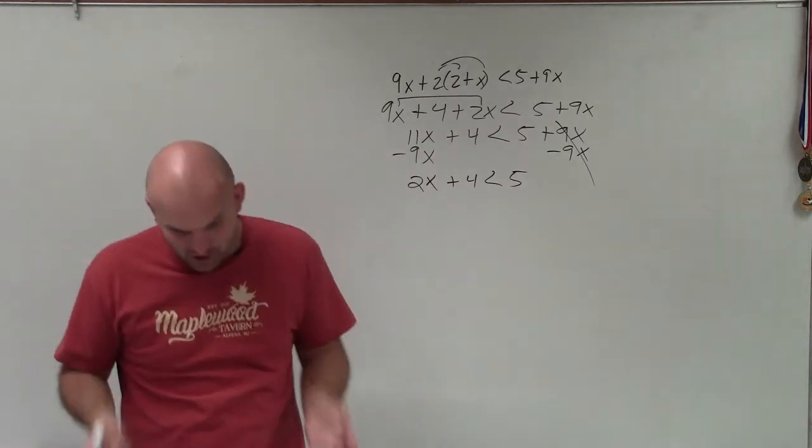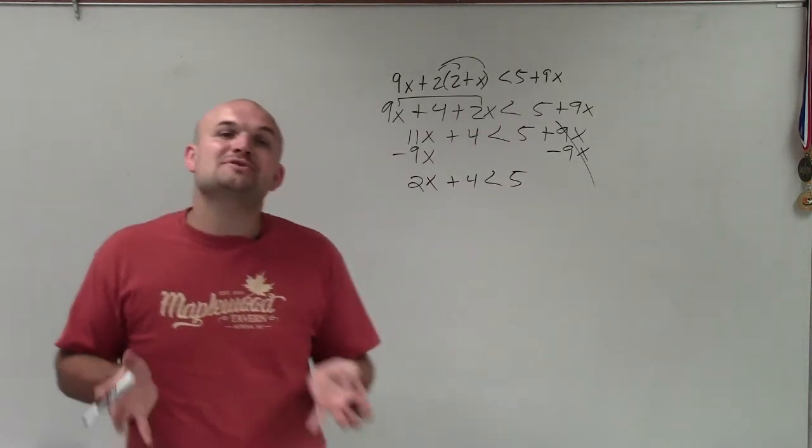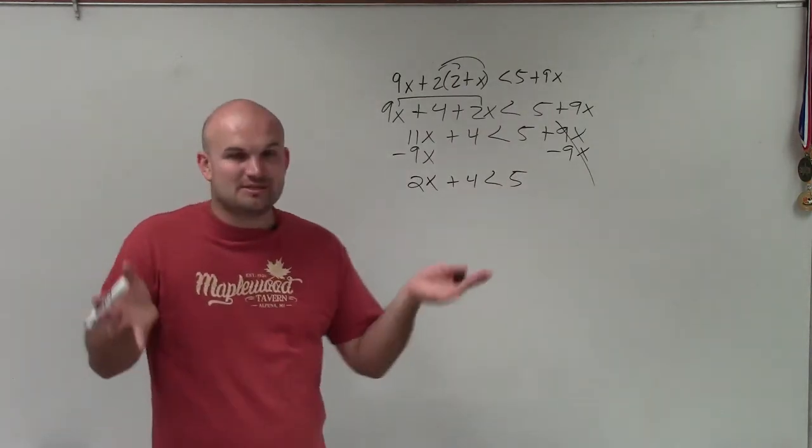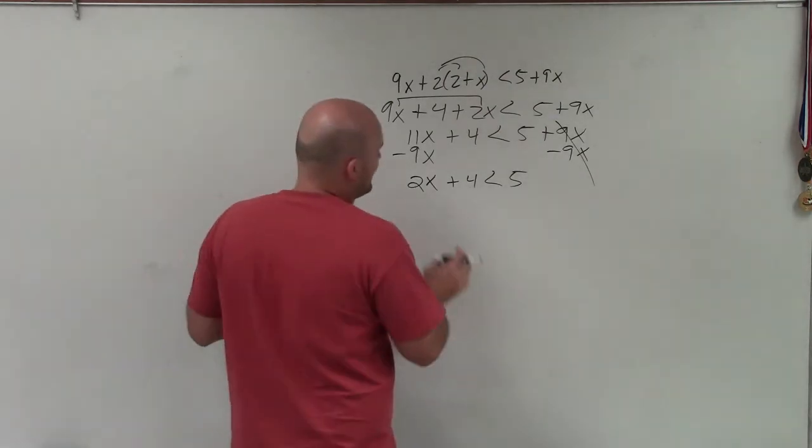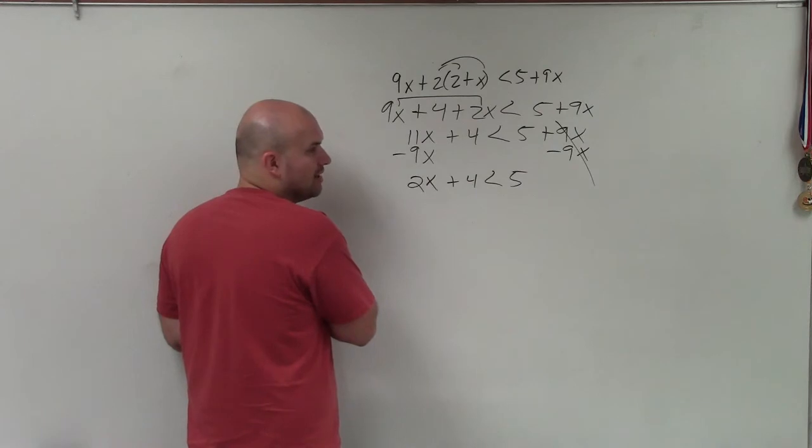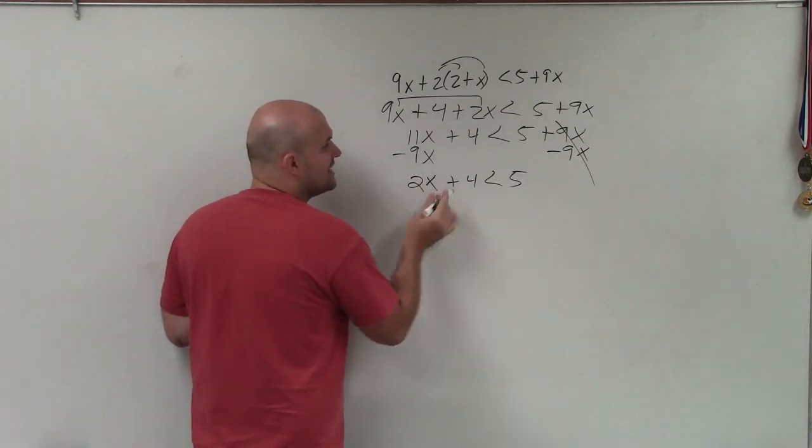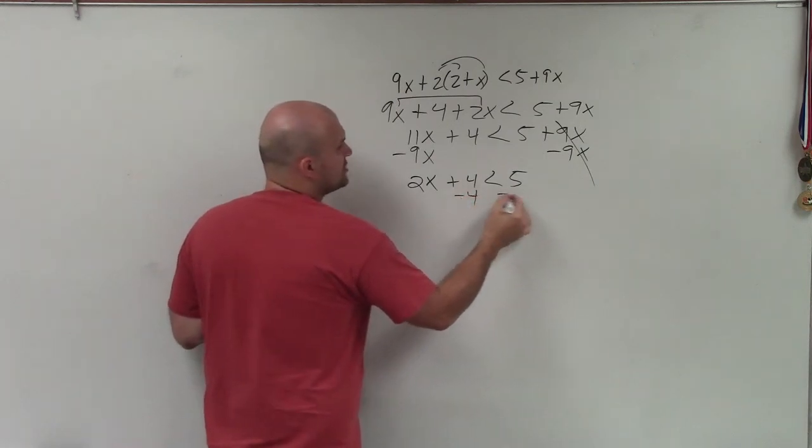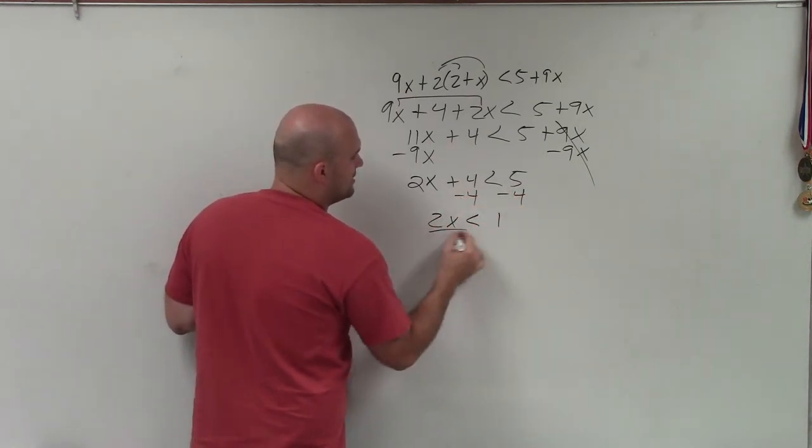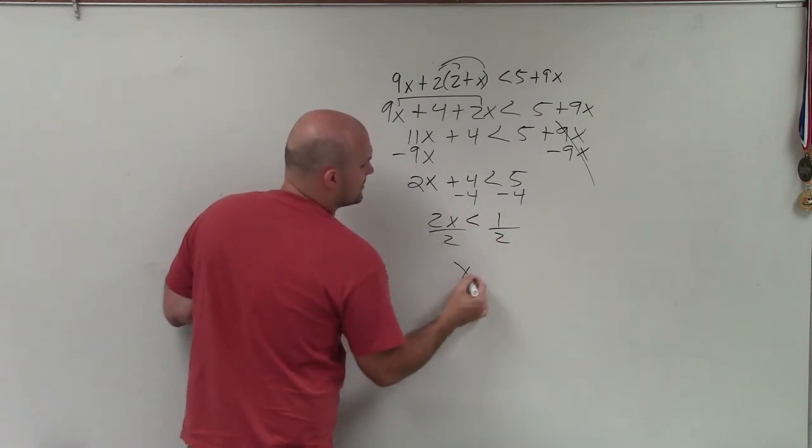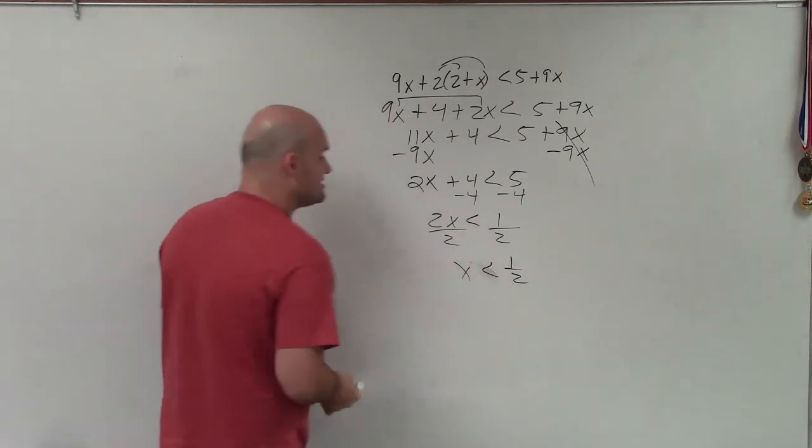Now we have an inequality that is a two-step inequality. We like two-step inequalities because at this point, this should be your strong point of being able to solve an inequality from a two-step inequality. So to do that, I now use my inverse operations. I always undo addition and subtraction first. So I have 2x is less than 1, divide by 2, divide by 2. x is less than 1 half.